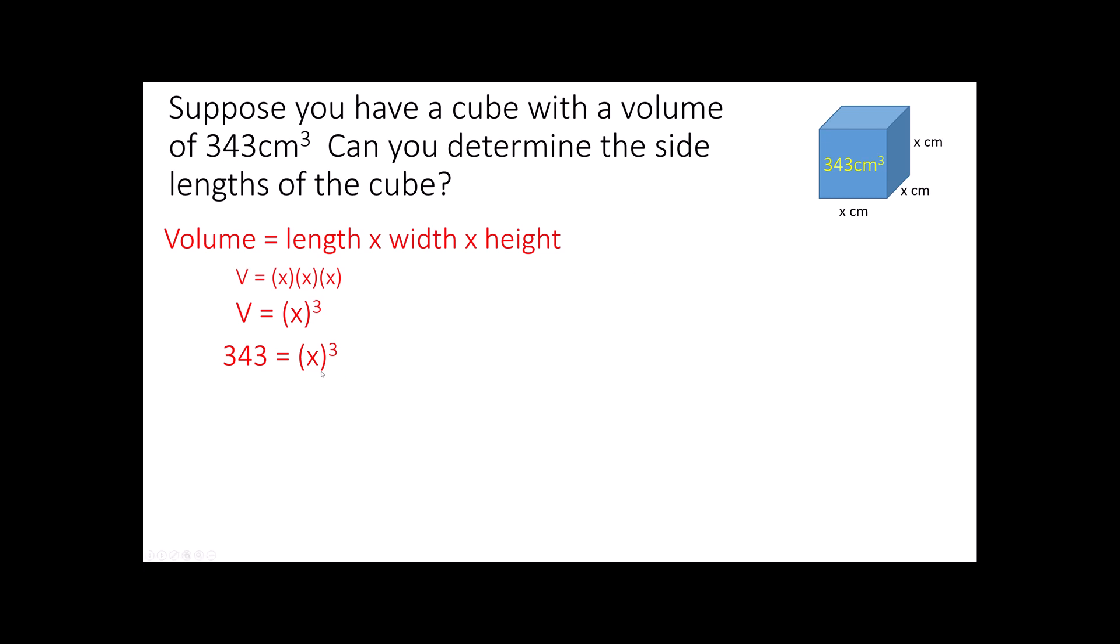So I can represent those with the same variable, and then I can abbreviate that using my exponent notation, x to the third power. Now we're given the volume, which leads us to this equation. What times itself times itself again is equal to 343? Any idea what that is? It's actually a 7. 7 times 7 is 49, 49 times 7 is 343. So 7 to the third power is 343. Notice in this instance a negative 7 would not work because negative 7 times negative 7 times negative 7 is 3 negative signs and would give you a negative 343.